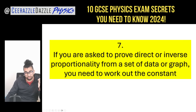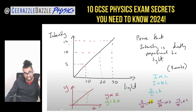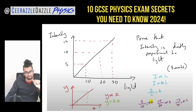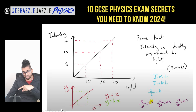Tip seven: if you are asked to prove direct or inverse proportionality from data or a graph, you need to work out the constant. For a graph of intensity vs. light that appears directly proportional, you use: intensity = k × light. Find the constant at multiple points — the constant should be the same at each point to confirm direct proportionality.